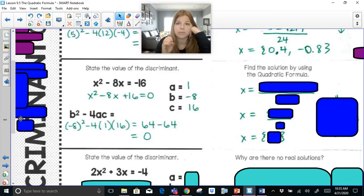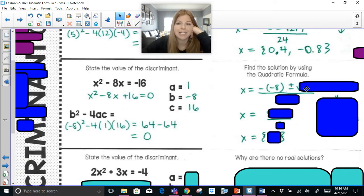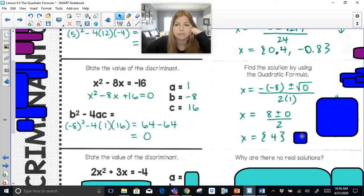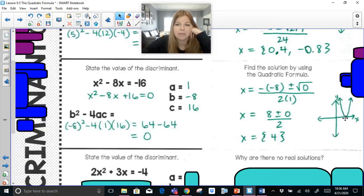When you have a discriminant of 0, there's only one solution to the equation. Using the quadratic formula, x equals negative negative 8 plus or minus the square root of 0 all over 2 times 1. This becomes 8 plus or minus 0 over 2. 8 plus 0 is 8 divided by 2 is 4. 8 minus 0 is 8 divided by 2 is also 4. You only get one answer, and that happens every time the discriminant is 0. If I was to graph it, it would just cross the x-axis at that one point of 4.